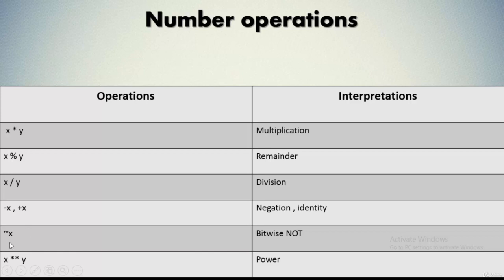Then we have negation and identity — whether a number is negative or positive. We also have bitwise NOT, which is applied over bits and converts each bit to its opposite. Finally, we have the power operation — if you want to raise a number to a certain power, you use this operator. That's all for number data types and number operations in Python.